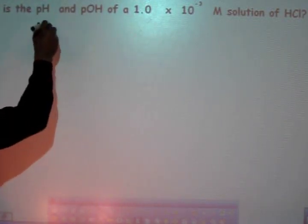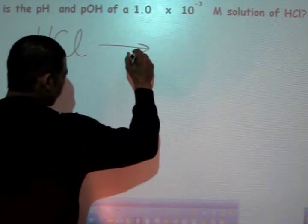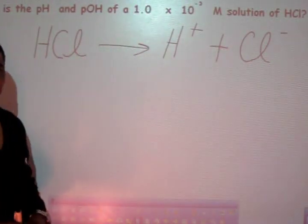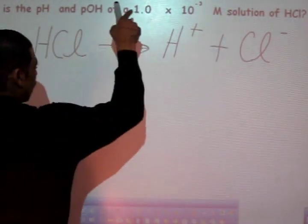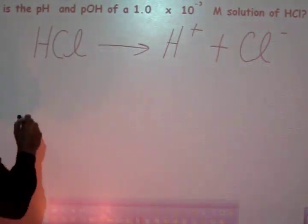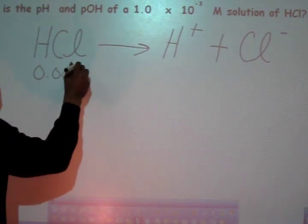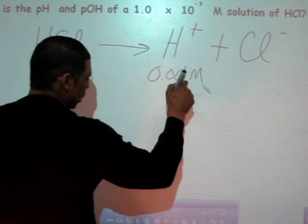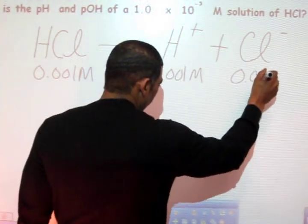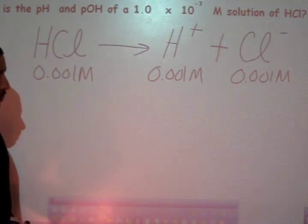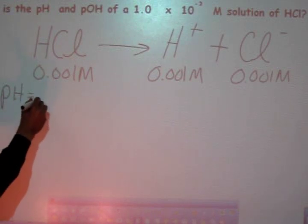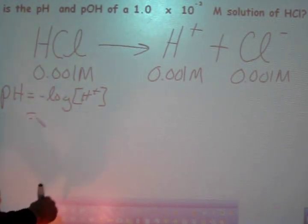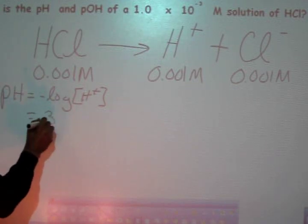We know that acids ionize to produce hydrogen ion and an anion. In this case the anion is chloride. Now HCl is a strong acid, so if we begin with 0.001 molar HCl, then we will also produce 0.001 molar H⁺ and 0.001 molar Cl⁻. pH is equal to the negative log of the H⁺ concentration, which gives us a pH of 3.